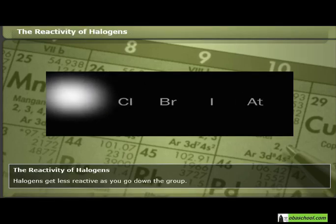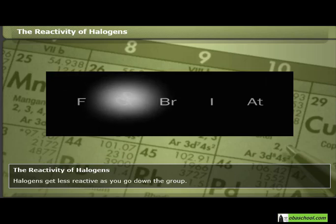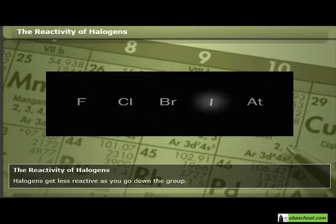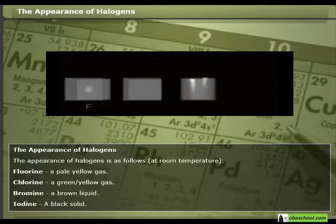Halogens get less reactive as you go down the group. The appearance of halogens is as follows, at room temperature.